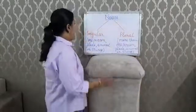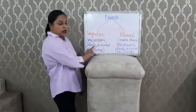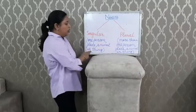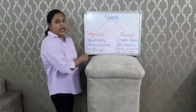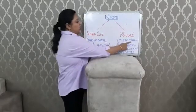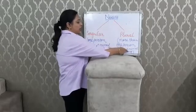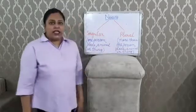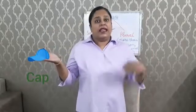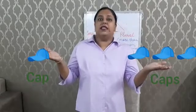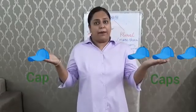When we talk about singular, we talk about one person, place, animal, or thing. And plural means more than one person, place, animal, or thing. For example, cap is a singular noun and caps is the plural noun for cap.